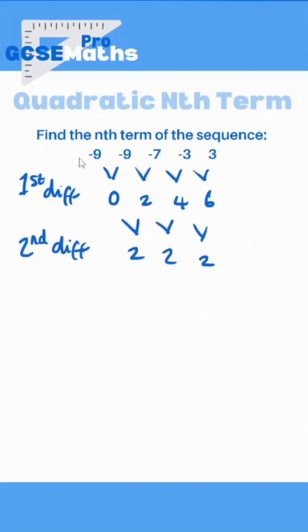Because a quadratic nth term always looks a bit like this: an squared plus bn plus c, we're looking to find out what a, b, and c are as numbers. So the first thing you're going to do is look at your second difference. In this case it's 2. You're always going to equate that to 2a. Because that's an equation, I can now solve that, so a is 1.